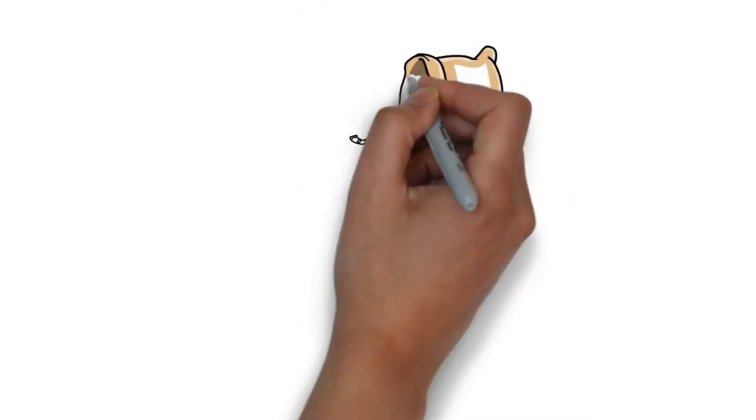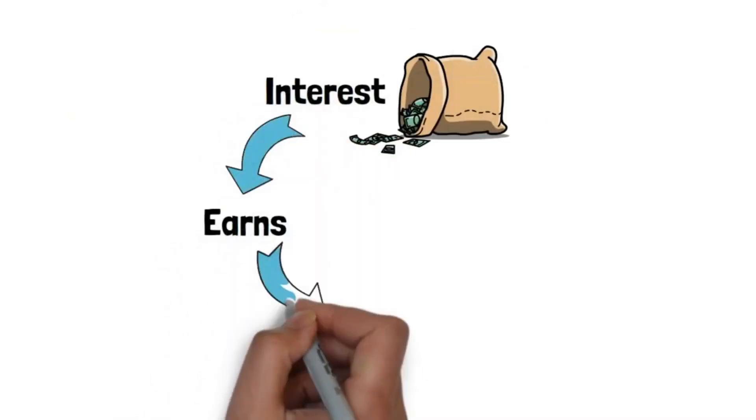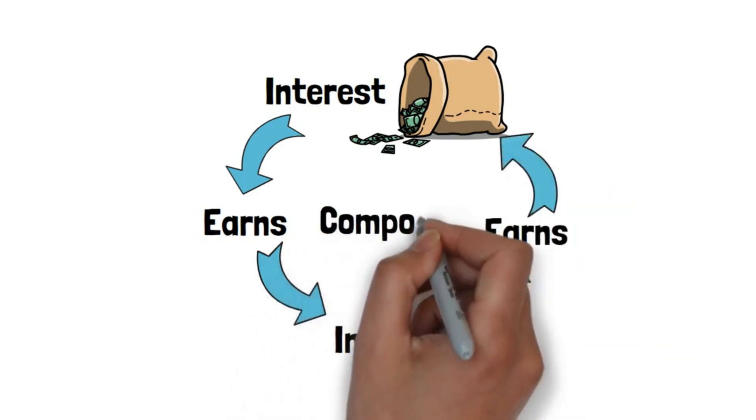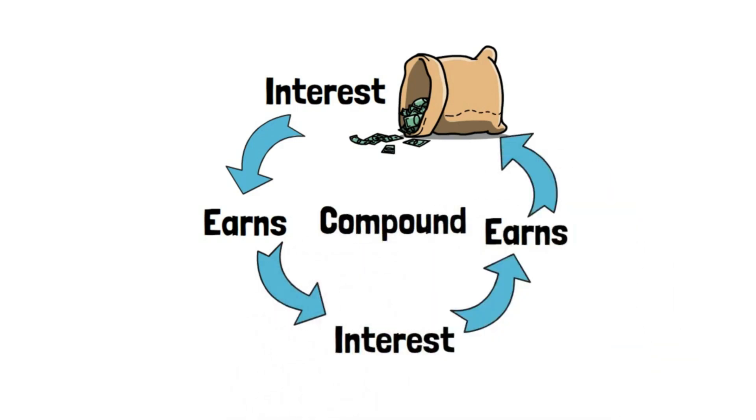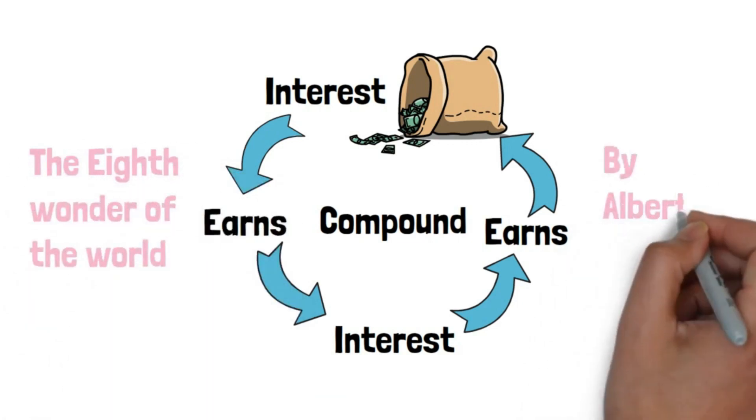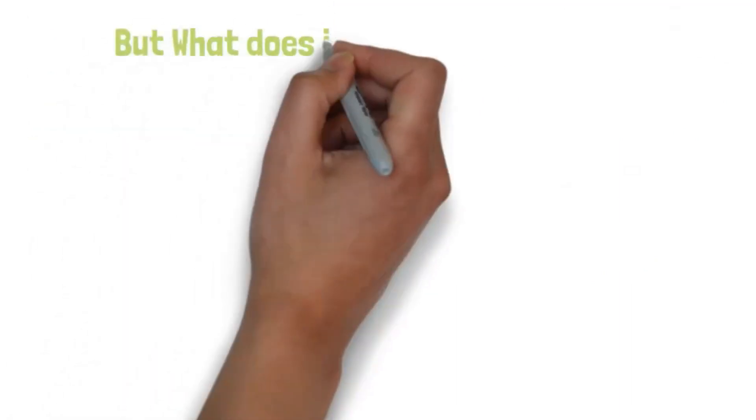If an interest earns additional interest that earns additional interest, it is compound rather than simple. This compounding effect is the wealth-creating engine. It was called the eighth wonder of the world by Albert Einstein. But what does it have to do with SIP?